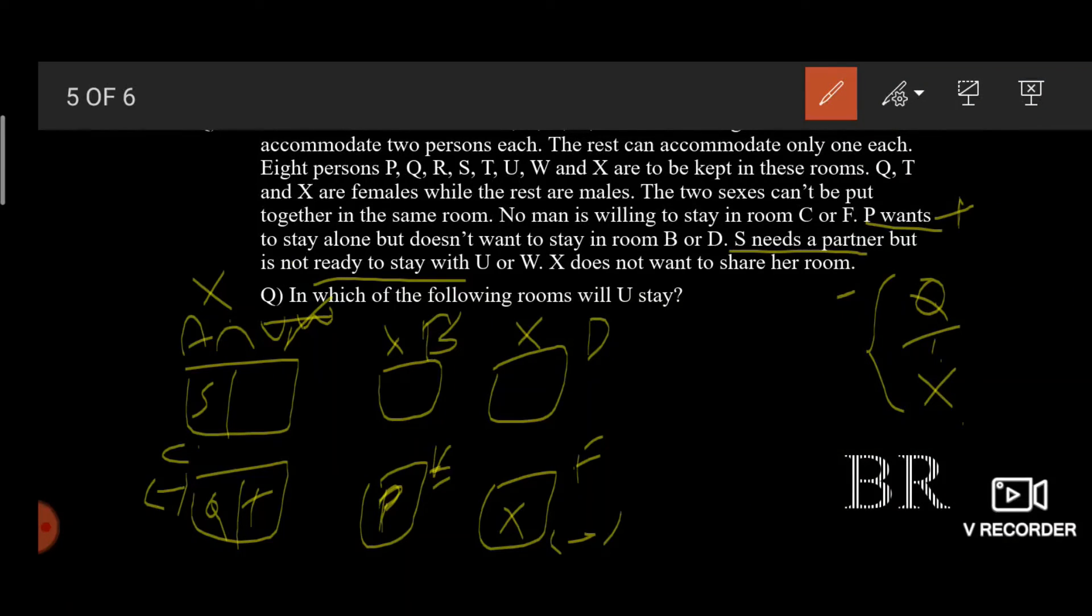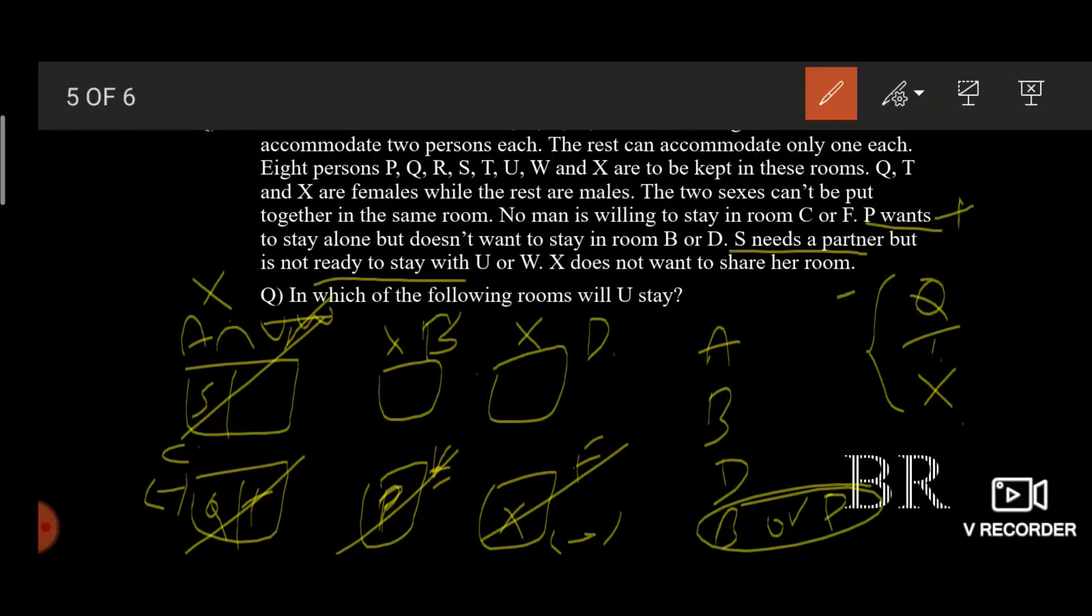And Q and T are accommodated in room C. So the question is in which of the following rooms will you stay? So you cannot stay in these rooms. There are two options left for you to stay. It is either B or D. Don't worry guys, in exam there will be options like A, B, D, B or D. You must choose last option as your answer.